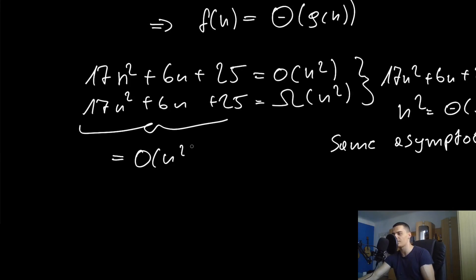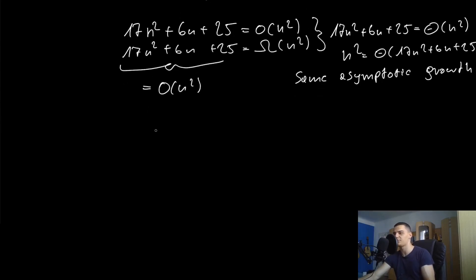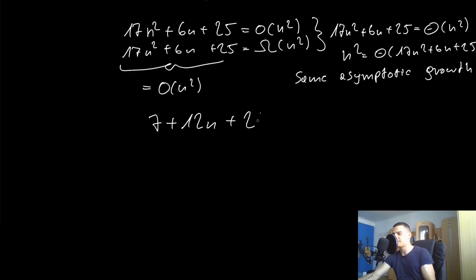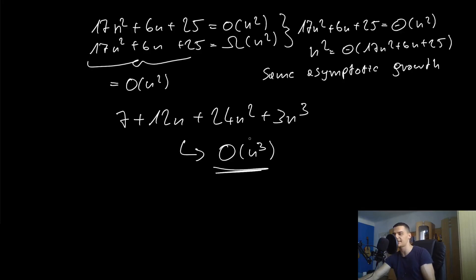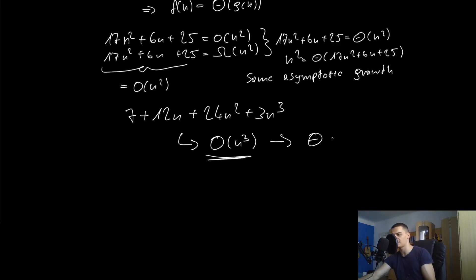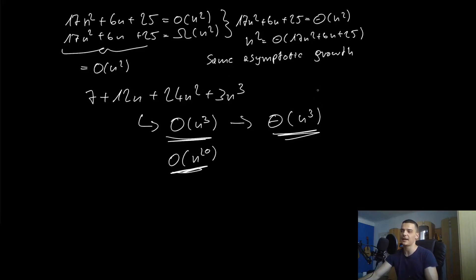When treating algorithms, if you end up with something like a count of primitive operations, you can say the runtime complexity is in O(n²) — you won't say O(17n²). For example, if analyzing an algorithm gives you something like 7 + 12n + 24n² + 3n³, it simply boils down to Big O of n³ — cubic runtime complexity. You could also say it's in Theta of n³, which is more informative. Saying it's in O(n²⁰) wouldn't be wrong, but the Theta notation is more useful here.